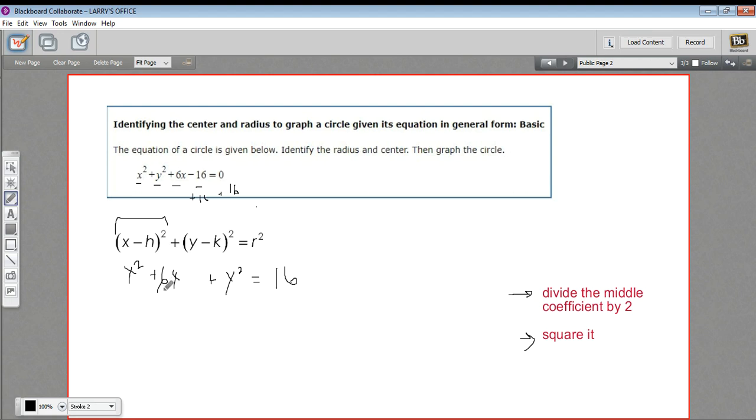So 6 divided by 2 is 3. 3 squared is 9. So I'm going to add 9 there. If I add 9 to this side of the equation, I have to add 9 to this side of the equation. And then I'm just going to separate this out because I want to think about this separately. So I've got x squared plus 6x plus 9, which actually looks maybe farther away from the standard form than we were before. But this is a perfect square.